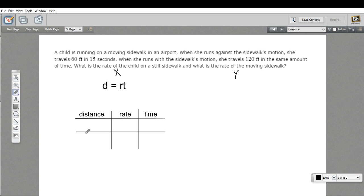So let's see here. We've got two situations: running against and running with. And when she's running against, she gets 60 feet for distance and time of 15 seconds. And when she's running with, she gets 120 feet. And the time is the same, so 15.